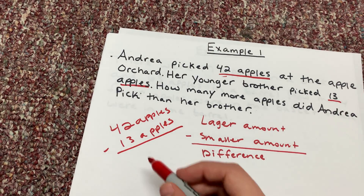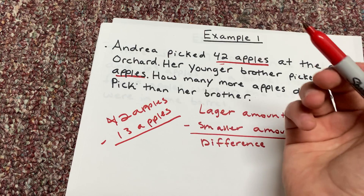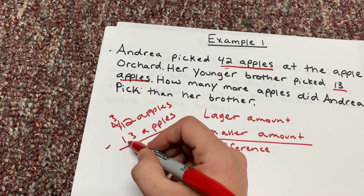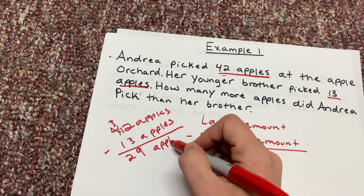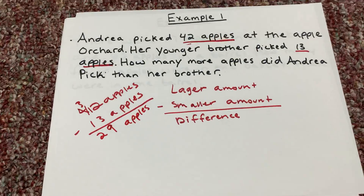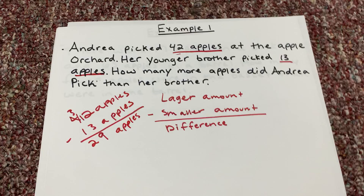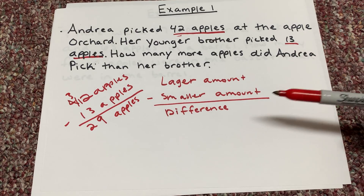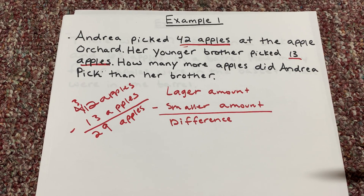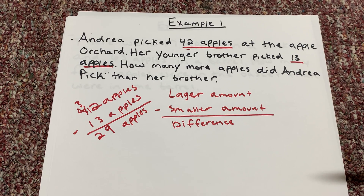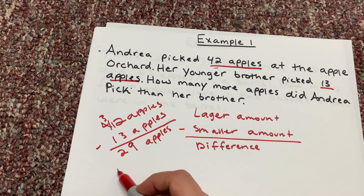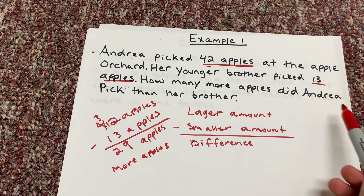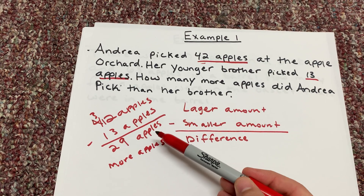When we subtract that, we borrow from our tens — so we have 12. We take 3 from 12, we get 9. This is a 3, so take 1 from 3, you get 29 apples. Andrea picked 42 apples and her brother picked 13, so the difference is 29 more apples. It asked how many more apples did Andrea pick than her brother — she picked 29 more apples.